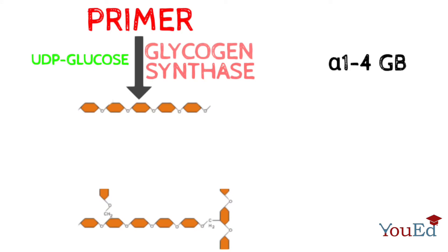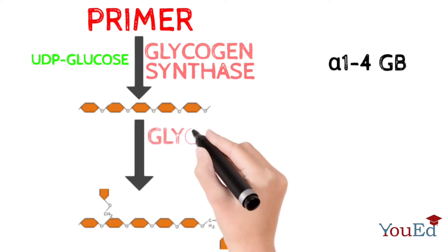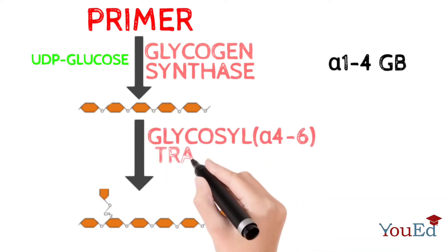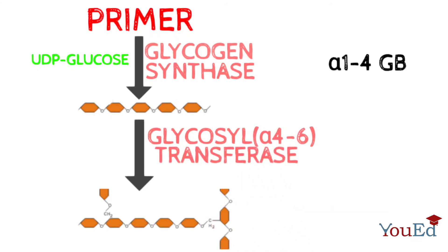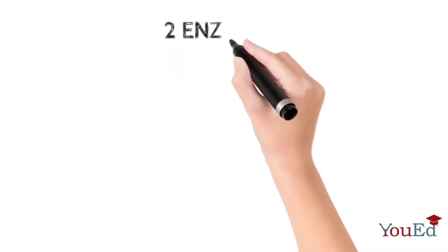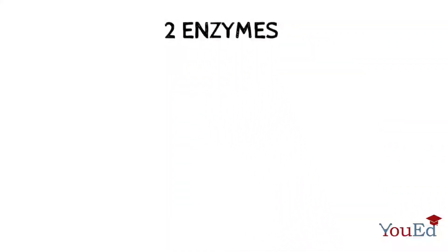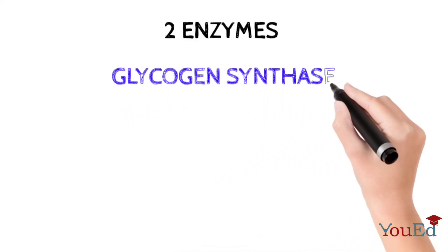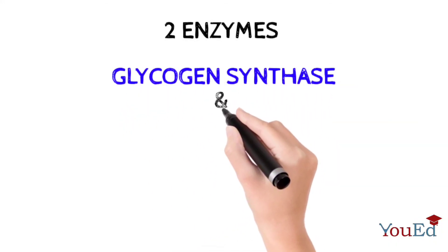Now branch formation takes place, which is done by enzyme glycosyl alpha 4,6 transferase. The main aim of this enzyme is to transfer alpha 1,4 bonds to alpha 1,6 for chain formation. The enzyme transfers five to eight molecules of glucose and produces chains in the pre-existing simple chain of glycogen.